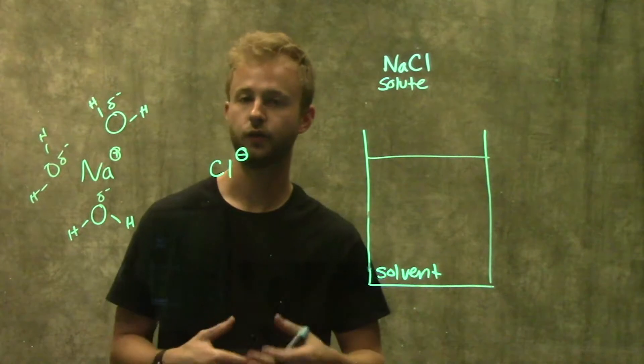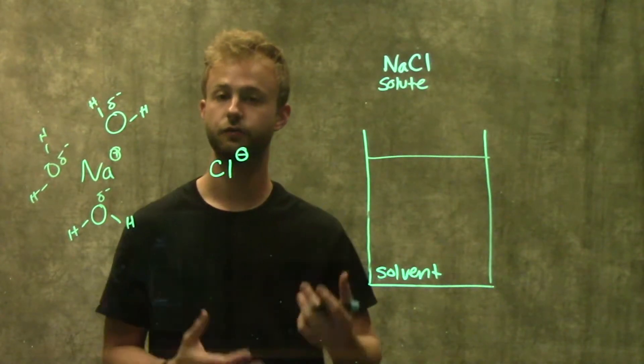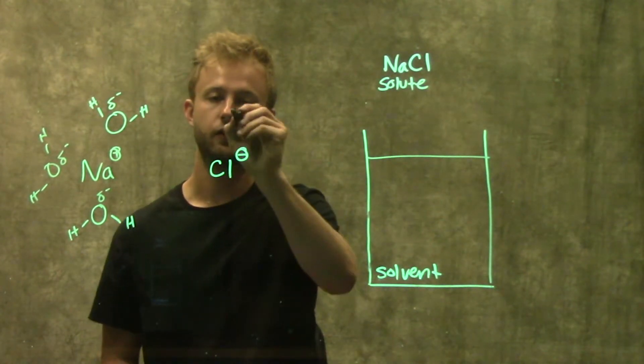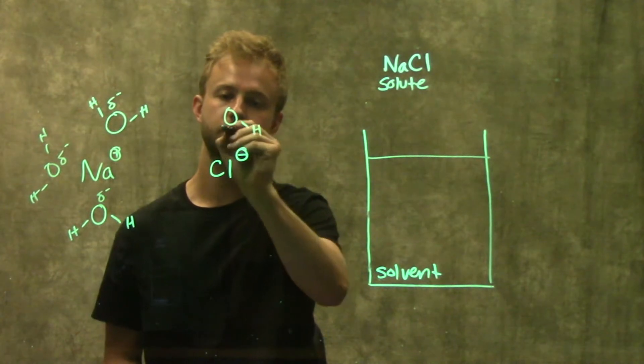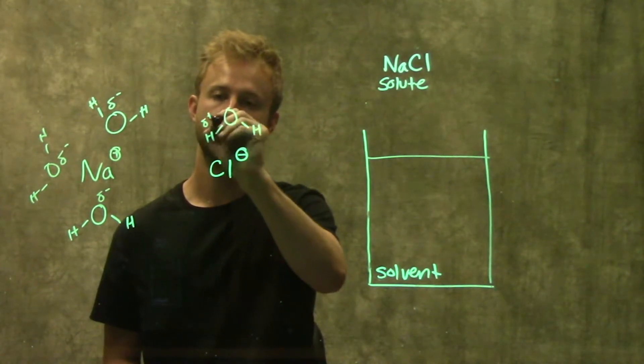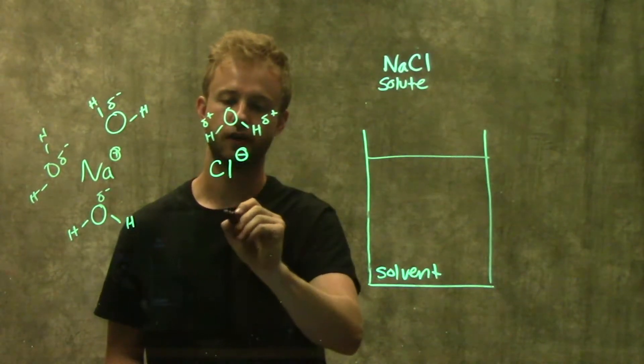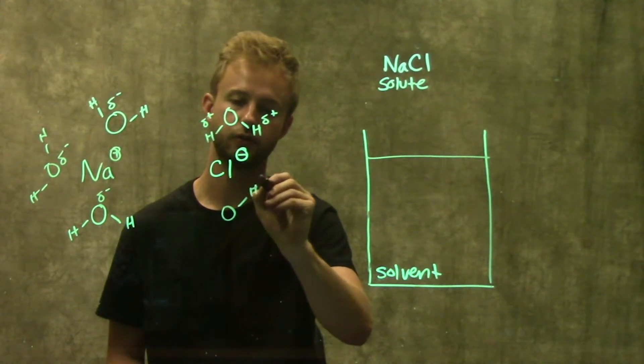Now for the chlorine ion, we're going to do kind of the same thing, but in reverse. For the chlorine ion, we want the two partially positive hydrogen atoms to interact with the negative charge on chlorine.